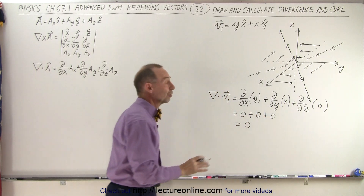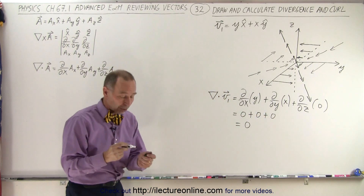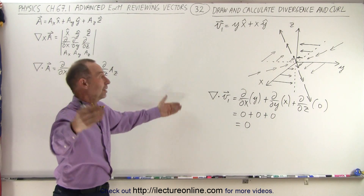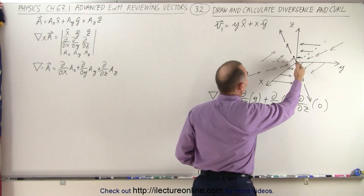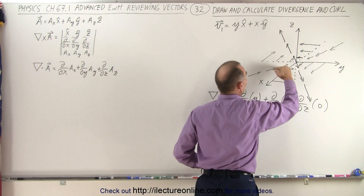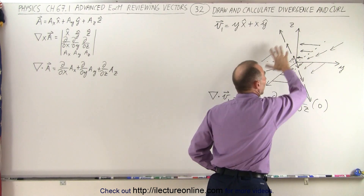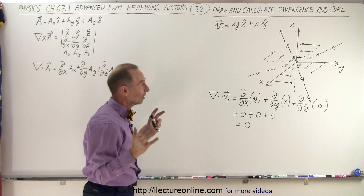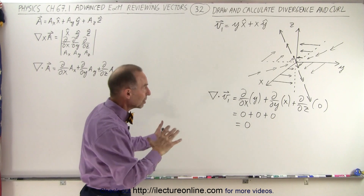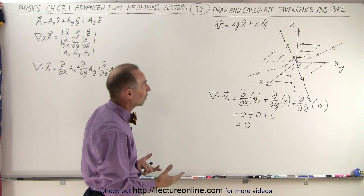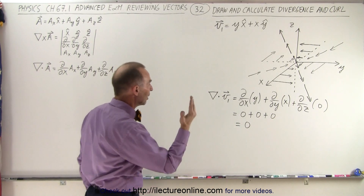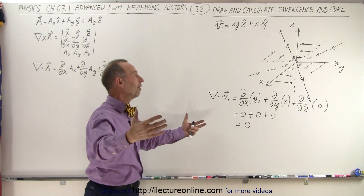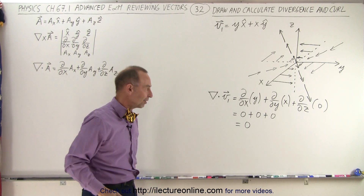There is zero divergence. The vector field doesn't fan out in any way, because notice that here it fans out but here it comes in, here it comes out, there it comes in — all in equal quantity and magnitude. There's an exact mirror image in every quadrant, so therefore it all cancels out. We have zero divergence. There's no efflux of vector field and no incoming vector field.